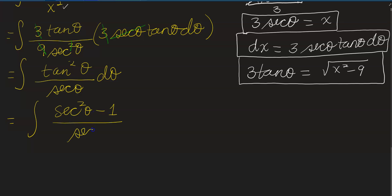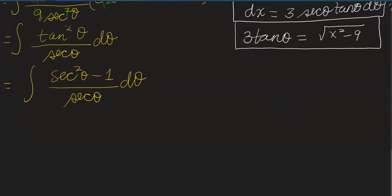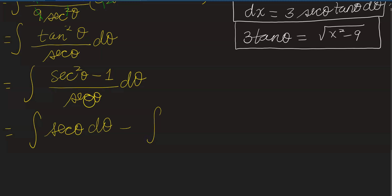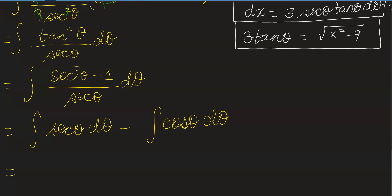This splits into two fractions: the integral of secant squared theta over secant theta dθ minus the integral of 1 over secant theta dθ. Secant squared over secant simplifies to secant theta, and 1 over secant theta is just cosine theta. So we have the integral of secant theta dθ minus the integral of cosine theta dθ. The integral of cosine is simply sine theta.